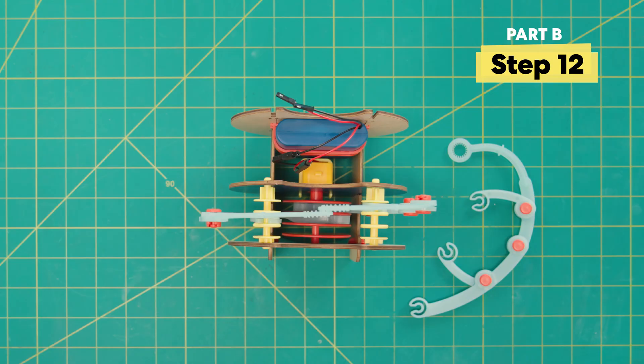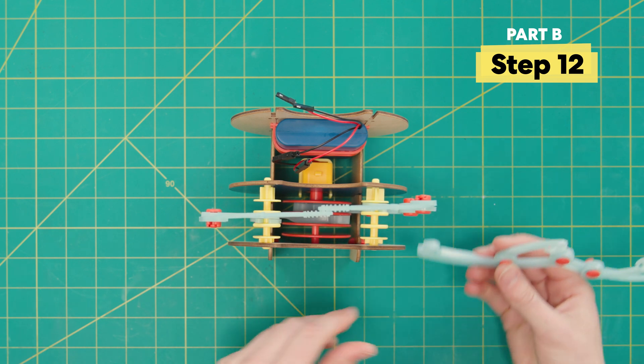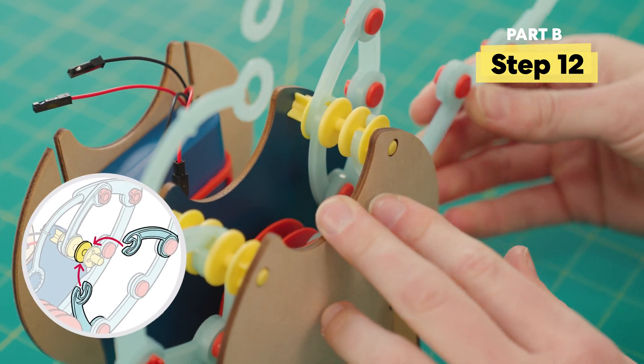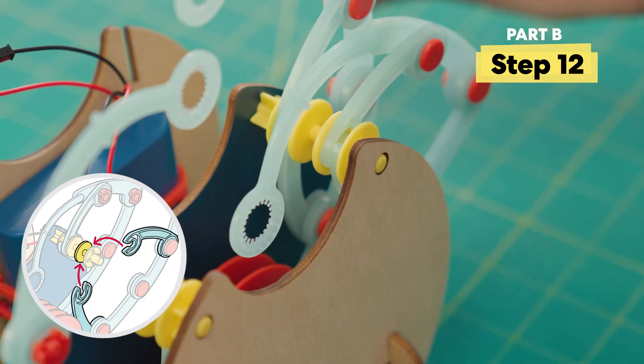Next, let's add the very last arm. We're going to clip into the slots that are farthest away from the motor. First, attaching to the orange cam and then attaching both of those little arms to the little yellow spindle. Perfect.